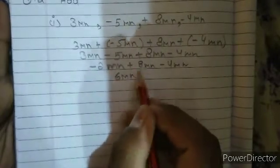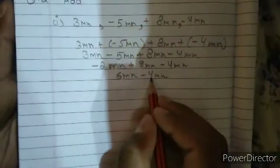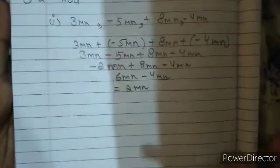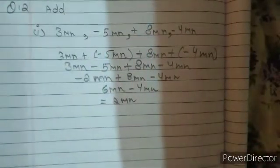So 6mn minus 4mn equals 2mn. So we have completed the question with correct solution. This is the last step we made from 3mn minus 4mn.